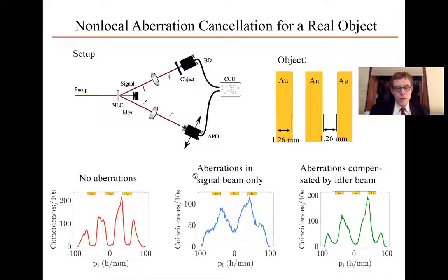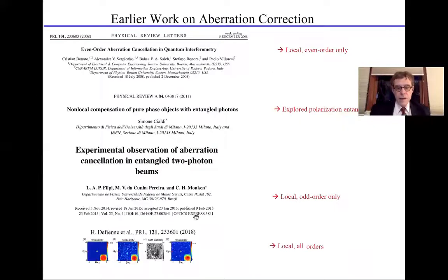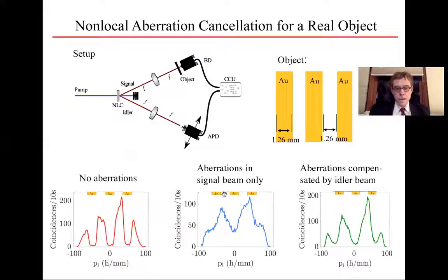When we put aberrations in the signal beam only, we no longer see three dips in the signal. But when we compensate, when we compensate them, you see that once again we get back to this structure that shows three dark regions. So the aberration cancellation works even for a real object.